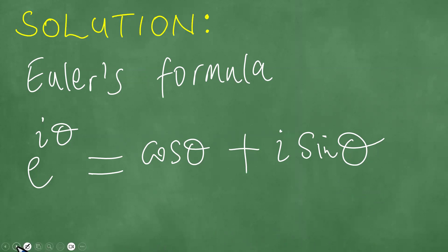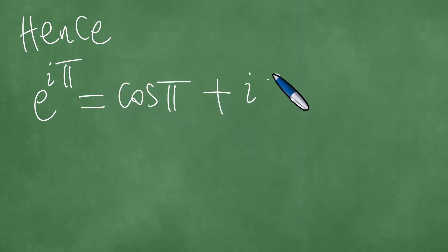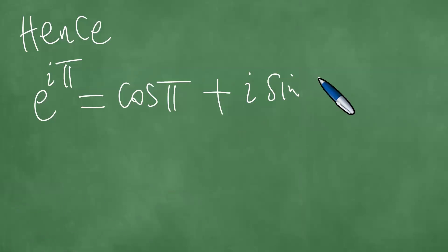Hence, it then follows that e to the i pi is actually equal to cosine pi plus i sine pi. So here we put a pi here, like so.